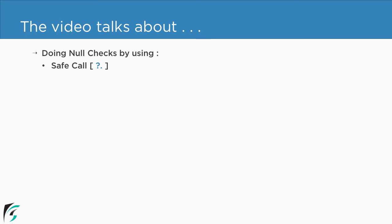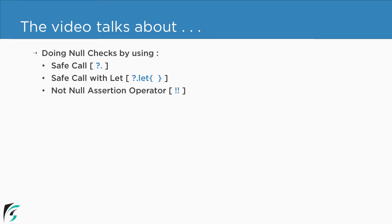For example, the safe call operator, which is represented with the help of question mark dot (?.), and then we have the safe call with let, which is represented by question mark dot followed by the let function that takes a lambda expression as a parameter, and then we have the not-null assertion operator that we were actually using within our application.